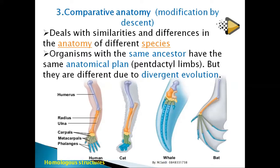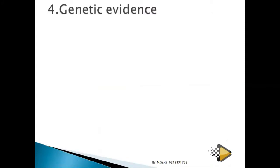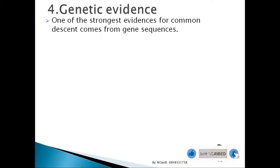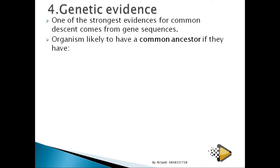Another evidence is genetic evidence, which involves examining genes. One of the strongest evidences for common descent comes from gene sequences. If organisms have nearly the same genes, they share a common ancestor or diverged recently. If the percentage of genetic similarity is very small, they diverged a long time ago.